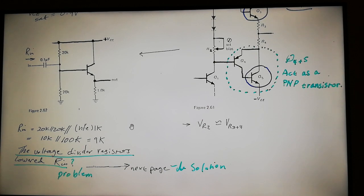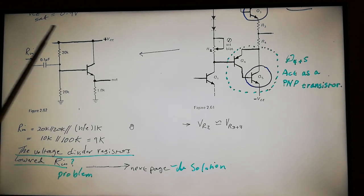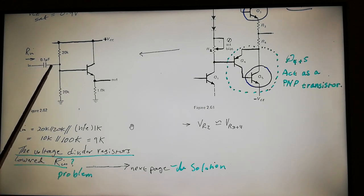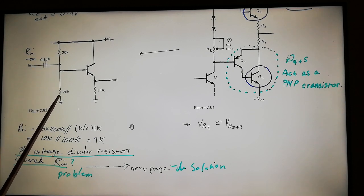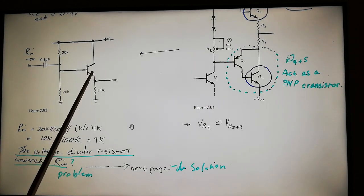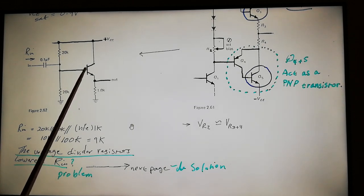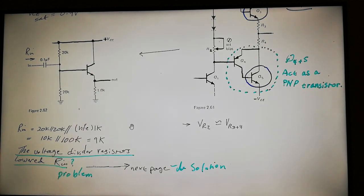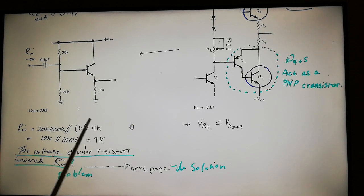Let's start. This circuit is an emitter follower and we want to calculate the input resistance for this amplifier stage. We have three branches in parallel at the input: this 20k, another 20k, and the third branch which includes the little r_e — the dynamic emitter resistance — in series with the 1k emitter resistor.